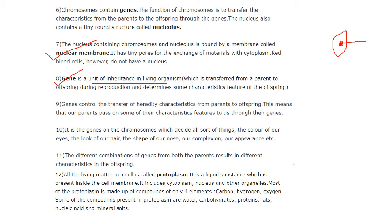During the reproduction process, when this gene is transferred from the parent to the offspring, the same characteristics will appear in the offspring — offspring means the baby. Gene controls the transfer of hereditary characteristics from parents to offspring; that means our parents pass on some of their characteristic features to us through genes. Genes are present in the chromosomes, and chromosomes are derived from the chromatin, which is the thread-like structure present inside the nucleus.